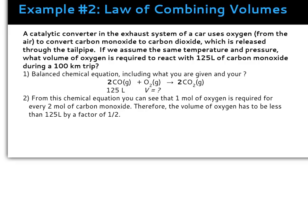Second example: a catalytic converter in the exhaust system of a car uses oxygen from the air to convert carbon monoxide to carbon dioxide, which is released through the tailpipe. The question tells us the balanced chemical equation. Assuming the same temperature and pressure — which is a requirement for using the law of combining volumes or Avogadro's theory — what volume of oxygen is required to react with 125 liters of carbon monoxide during a 100 kilometer trip? Note: the number of kilometers is unnecessary information.